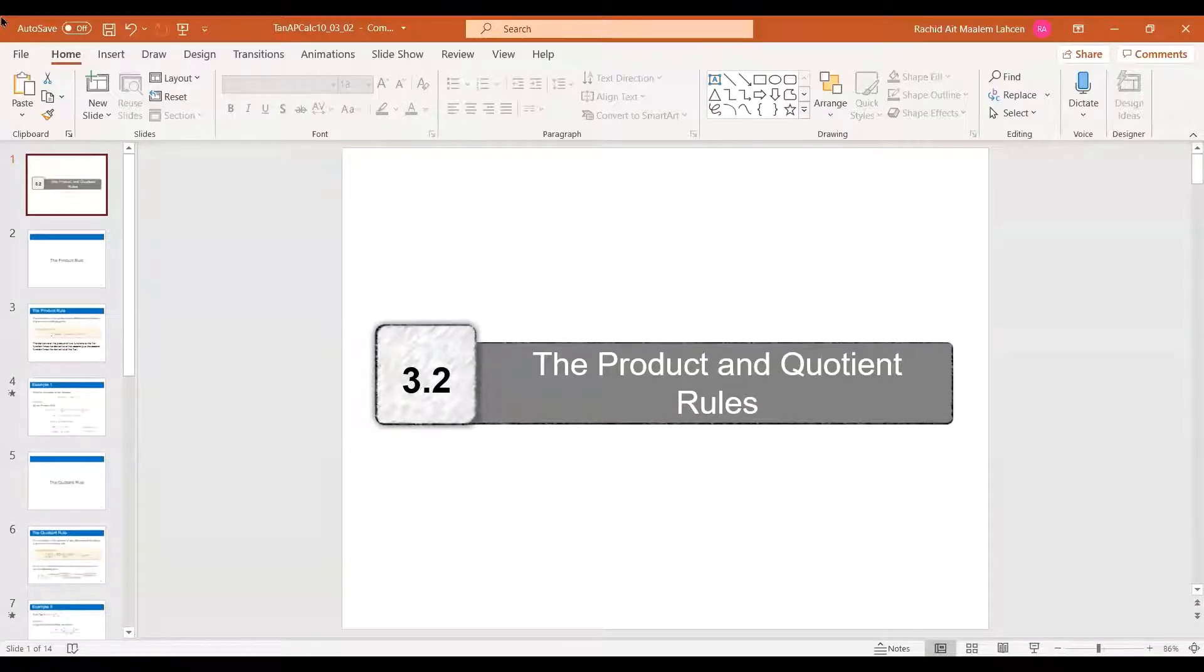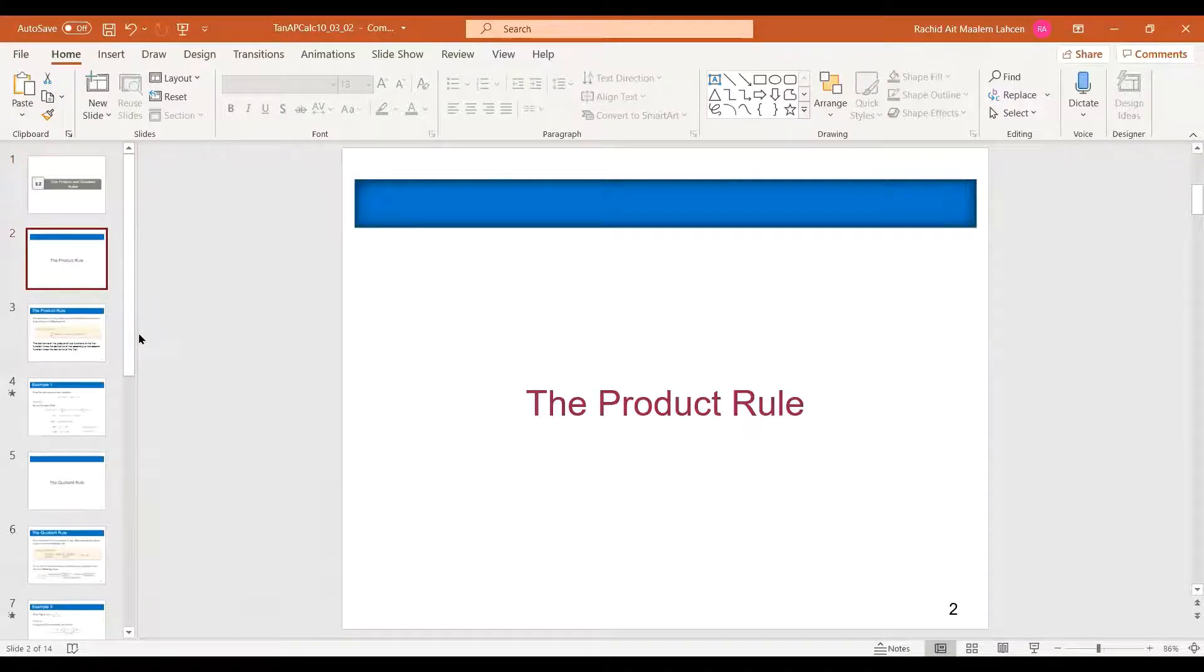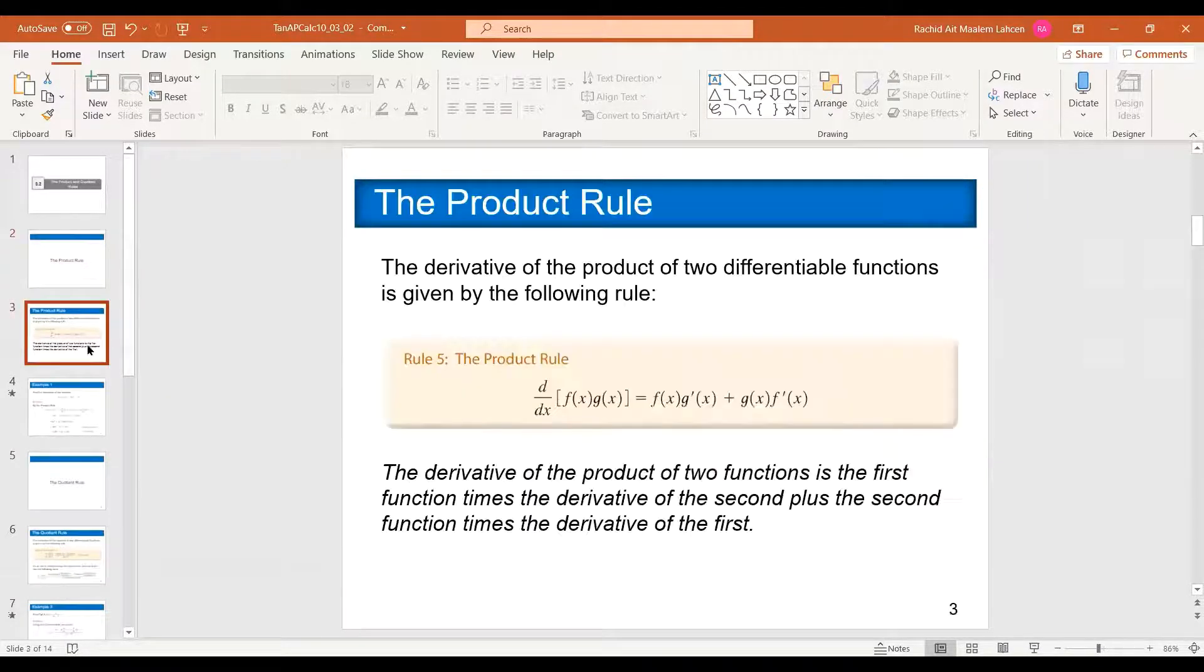Hi, everybody. So we'll continue Chapter 3. And after the four basic rules, now we see the product and the quotient rule. The product rule is where the functions are multiplied. The quotient rule is where they are divided.